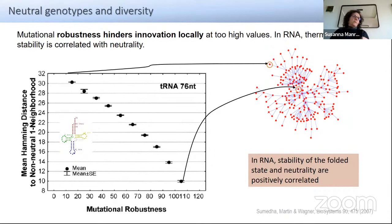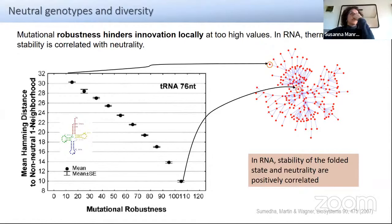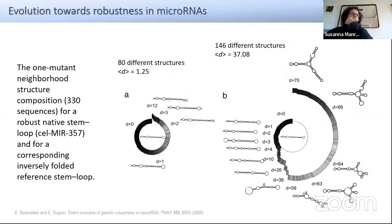To wrap up: everything I'm saying can be extended to any sensible and functional definition of phenotype. Let's go back to RNA. We have these differences in robustness in different regions of the network. Let me give a natural empirical example using micro RNAs. This is a functional micro RNA at the center, showing its secondary structure — a natural sequence.